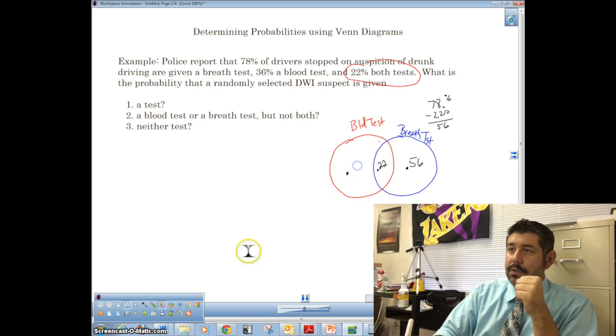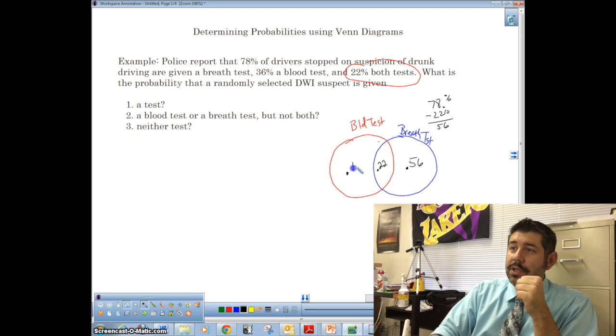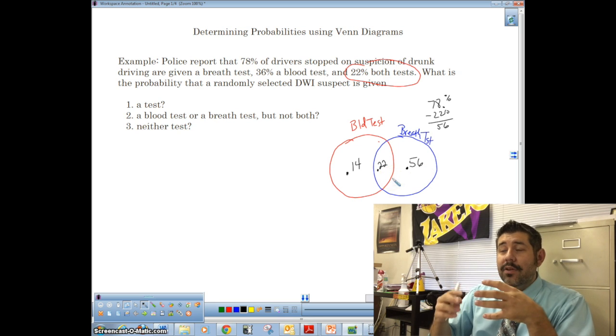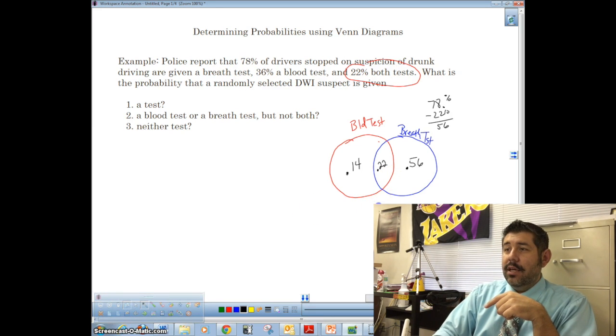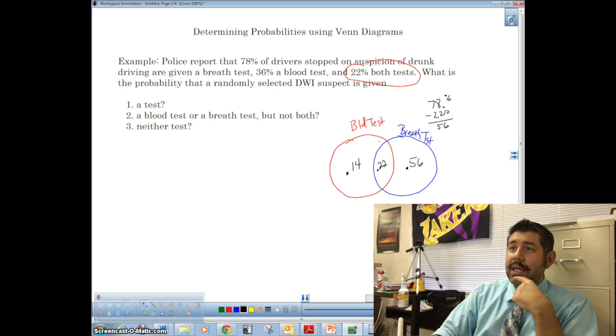Now, what should happen is that these percentages, if I add them all together, those should equal 100%, right? So double check, 56 plus 22 is 78, plus 14 is 78. Oh, I must have added wrong somewhere.